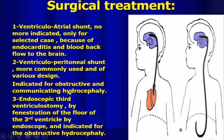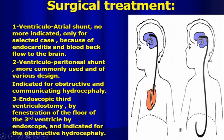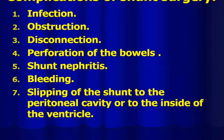Endoscopic third ventriculostomy involves penetration of the floor of the third ventricle into the subarachnoid space using an endoscope. This procedure is indicated only for obstructive hydrocephalus. Complications of shunts include infection, obstruction, disconnection, and perforation of the bowel, bladder, or vagina. Shunt nephritis can occur by autoimmune stimulation, and surgery can cause bleeding. The shunt can also slip into the peritoneal cavity or back into the ventricles.